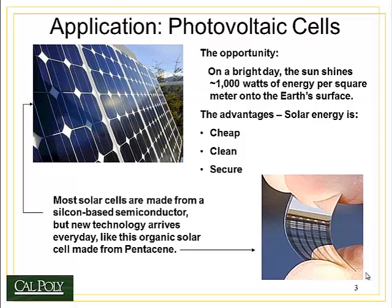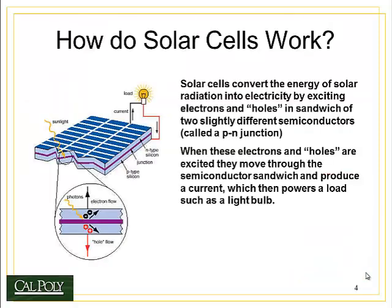New technology arrives every day, and there's now flexible solar cell material called pentacene, which in theory could be wrapped around telephone poles, put on the roofs of cars, and used in all kinds of applications. Right now it's rather expensive, so it hasn't been used widely. The basic idea of solar cells is that you have an N-type silicon semiconductor layer on top and a P-type silicon semiconductor on the bottom. When a photon from sunlight strikes the NP junction, you get electrical current flowing through the semiconductor.